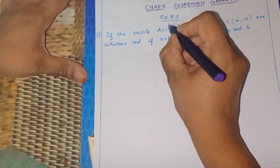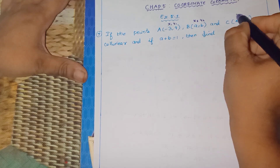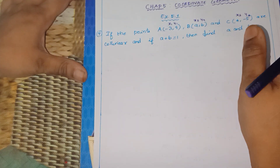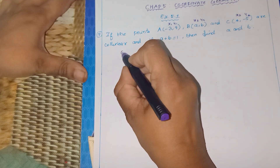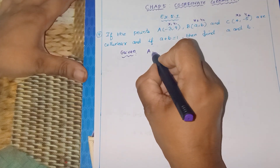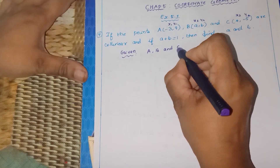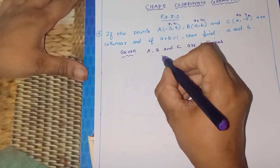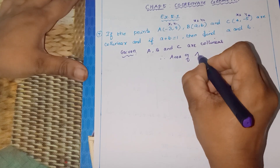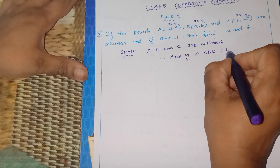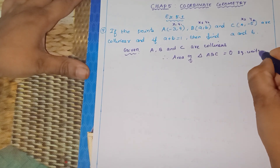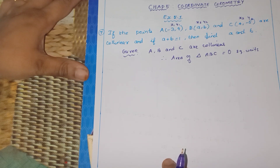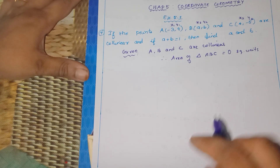We will assign the coordinates as x1, y1; x2, y2; x3, y3. Because the variables must be in order. Since A, B, and C are collinear, therefore the area of triangle ABC will be 0 square units. This is the key hint — collinear means we apply the area of triangle formula equal to 0.